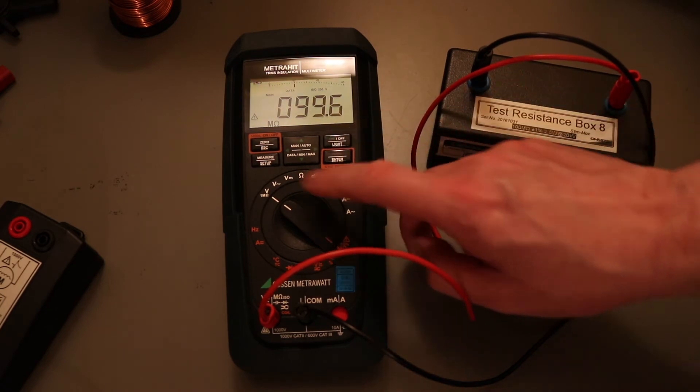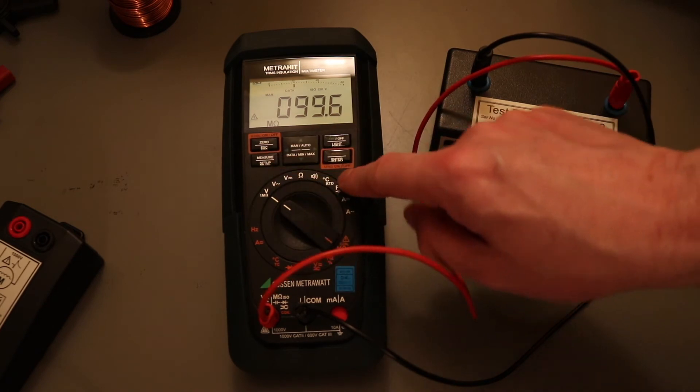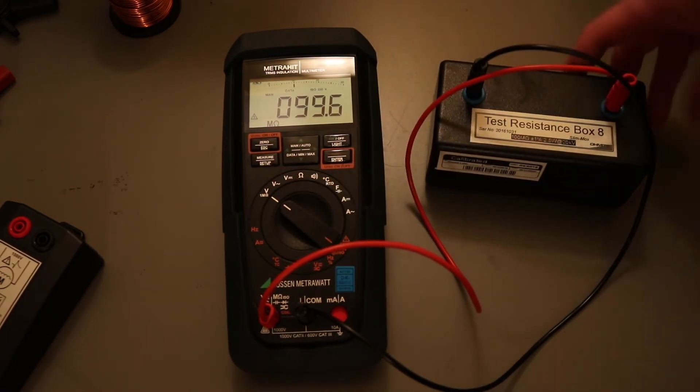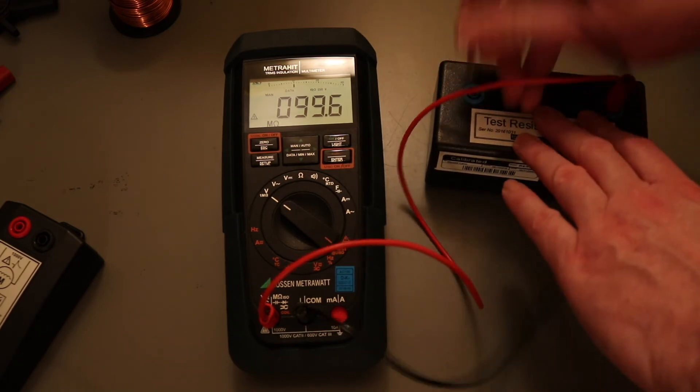You can turn the light on and off but all these other buttons don't do anything now. They're all locked out. The only button that works is the insulation test button. So that's on a test resistor. Say that's a 100 megaohm test resistor. And we've got a 99.6.